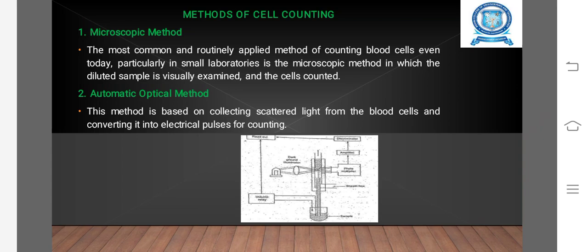Methods of cell counting: Microscopic method and Automatic optical method. The microscopic method is the most common and routinely applied method of counting blood cells even today, particularly in small laboratories. In this method, the diluted sample is visually examined and the cells are counted.